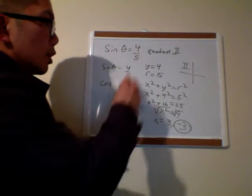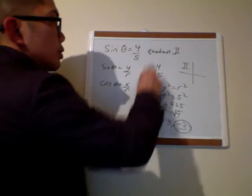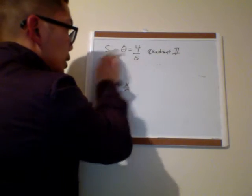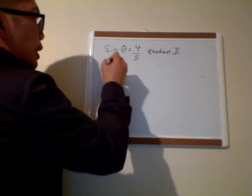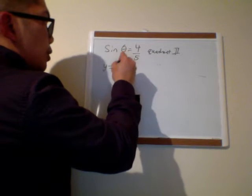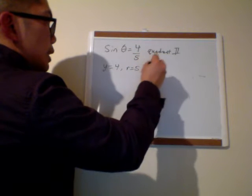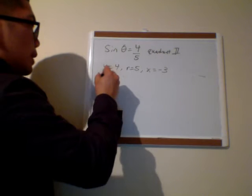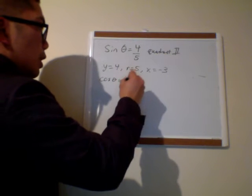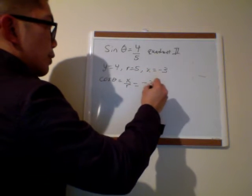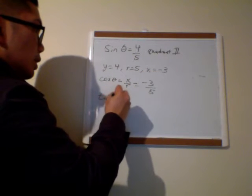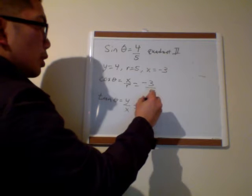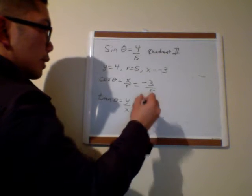With all that information, I should be able to get all of my trig functions. So y was 4, r is 5, and x is negative 3. My cosine was x over r, so that's negative 3 over 5. My tangent is y over x, so that's 4 over negative 3, which is just negative 4 thirds.